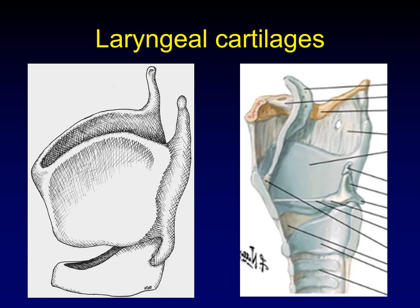Now, about laryngeal cartilages. This drawing is a representation of the external appearance of the laryngeal cartilages. You can see the large thyroid cartilage with its ala on either side and its superior and inferior cornua. You can see the complete ring of the cricoid cartilage, although its back is covered by the thyroid cartilage — which also means you can't see the arytenoid cartilages, as they're on the inside, perched on top of the cricoid cartilage.